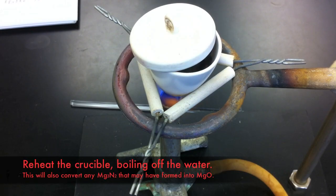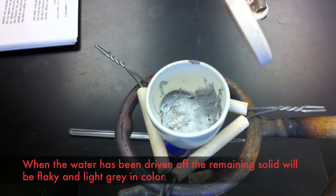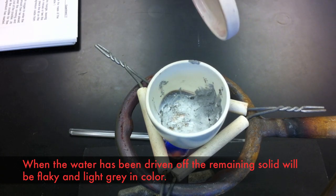Return the crucible to the Bunsen burner and heat it once again. This will complete the formation of the magnesium oxide. This process will take several minutes, but you can check on it periodically, and once it is all light gray color, the reaction is complete.